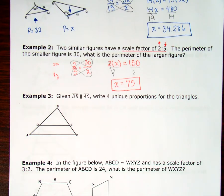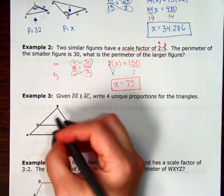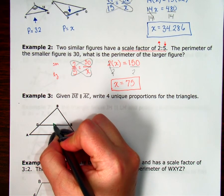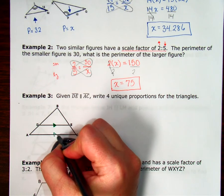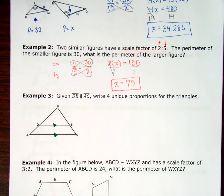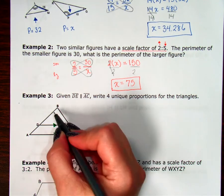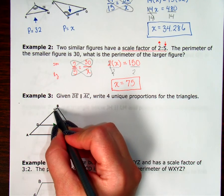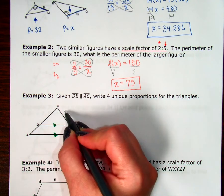Number 3. Given segment DE is parallel to segment AC. I'm going to mark that. DE is parallel to AC. Write 4 unique proportions for the triangles. So I need to remember that my sides of the triangles that are intercepted by those parallel lines are divided into proportional parts.